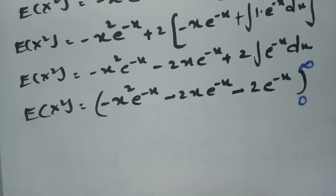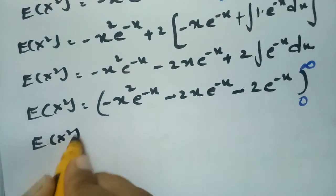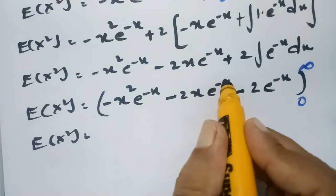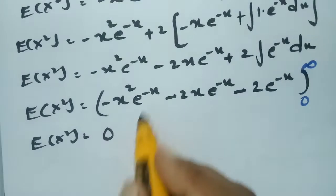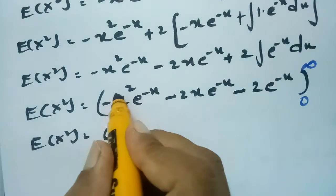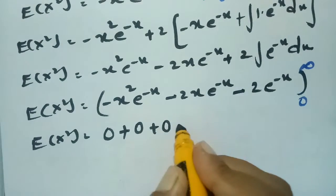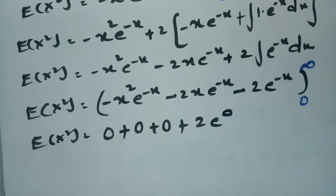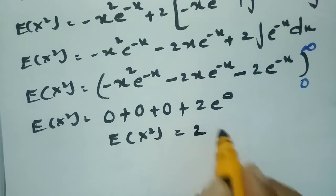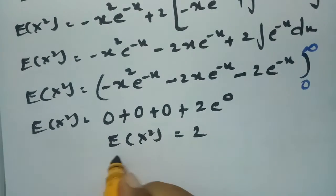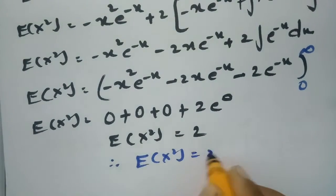Substituting the upper limit infinity: all terms involving e^(-∞) equal 0. At the lower limit x = 0, the terms minus x²·e^(-x) and minus 2x·e^(-x) are both 0, leaving 2·e^0 = 2·1 = 2. Therefore E(X²) = 2.